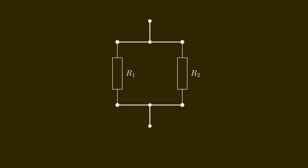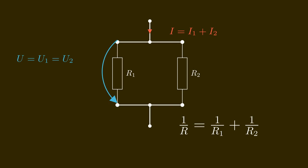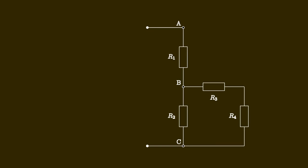What if we connect two resistors in parallel? This time the incoming current is split up — one part flows through R1 and the other part through R2. But the voltage across each resistor is the same: U is the total voltage and equals U1 and U2. So the total resistance is given by: 1 over R equals 1 over R1 plus 1 over R2. This is because the current is proportional to 1 over R.